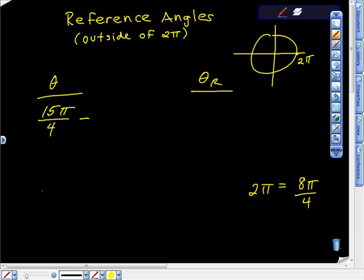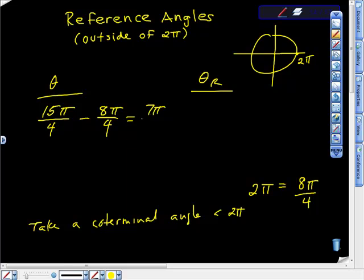So just to get back inside of 2π, what we're going to do is take a coterminal angle less than 2π. So all I'm going to do here is take 15π fourths and I'm going to subtract out 8π fourths and see if that gets us inside 2π. And 15 minus 8 is 7, so it's 7π fourths.